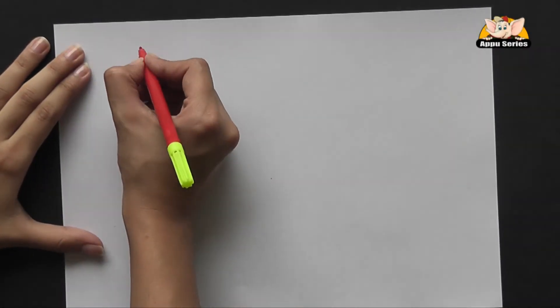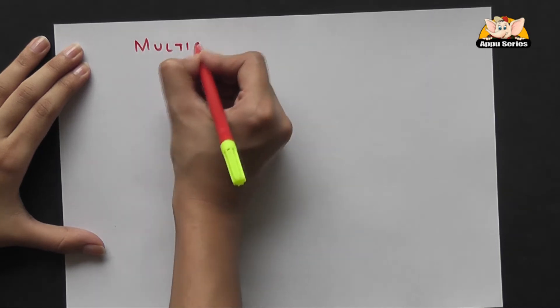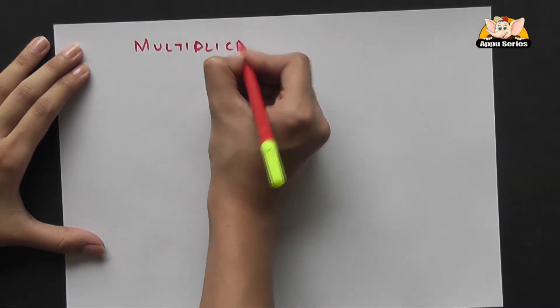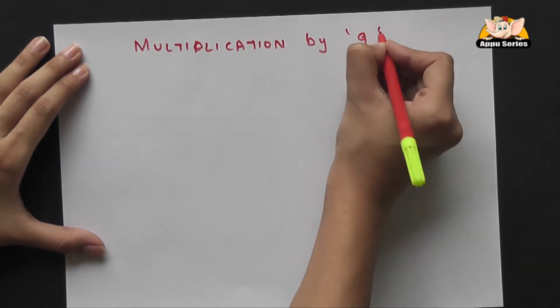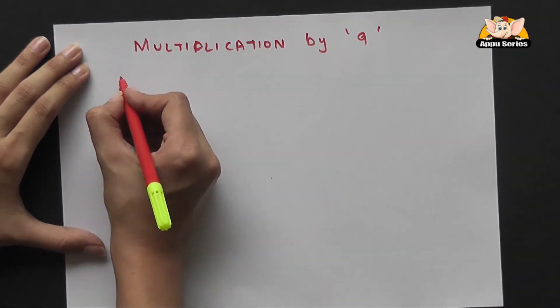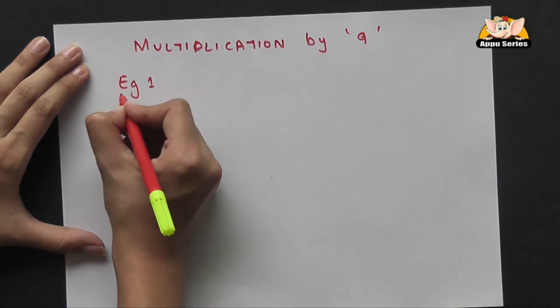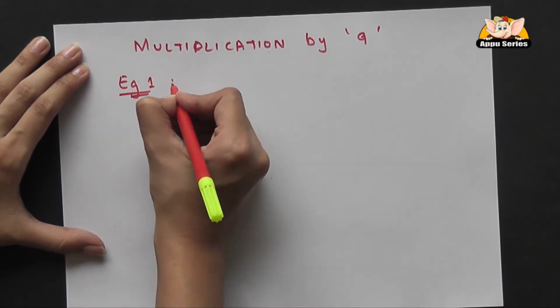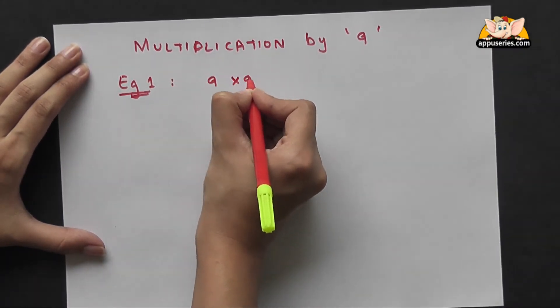Hello! Today I'm going to show you the fastest method of multiplication by nine. We'll start with an easy example: nine into nine.